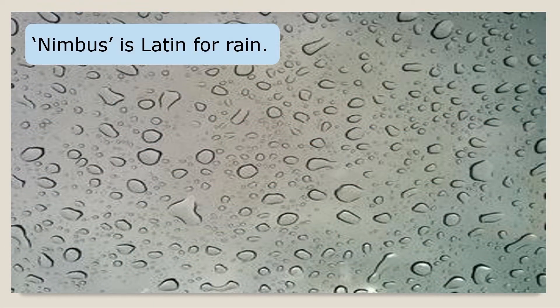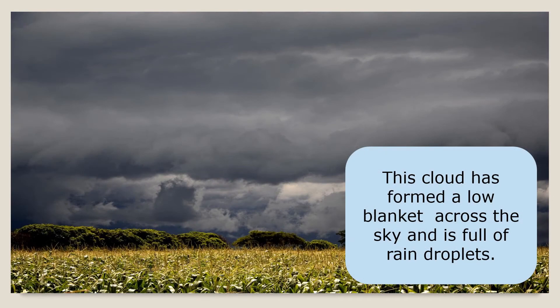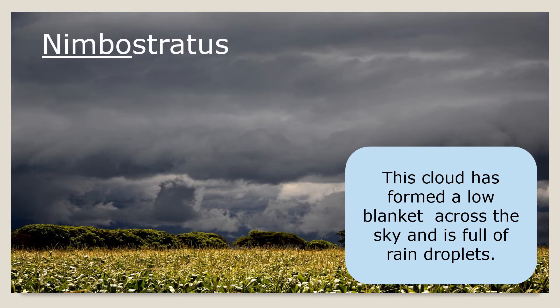Nimbus is the Latin word for rain. This cloud has formed a low blanket across the sky and from the colour you can see it is full of rain droplets. This is called a nimbostratus cloud. Nimbo means rain and stratus means layer.